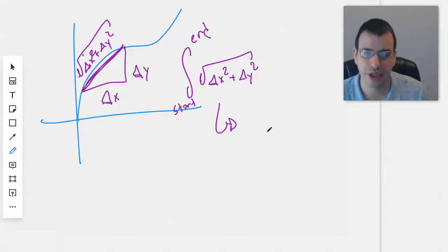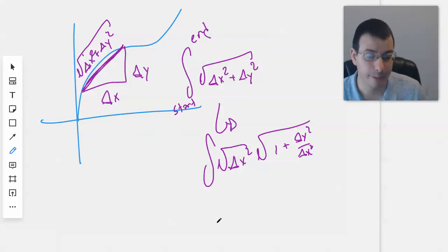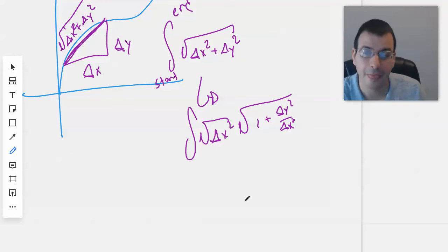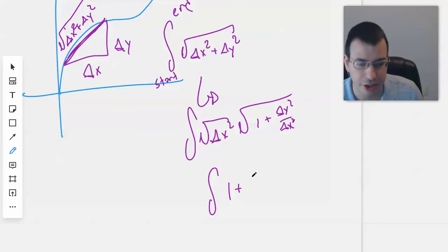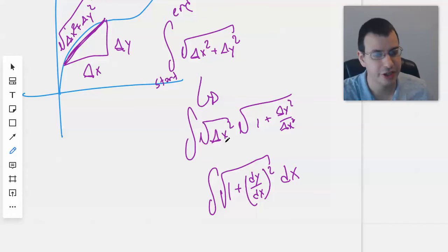When we simplify this, we can do something like dx squared times the square root of 1 plus delta y delta x squared. This would then just go to delta x. And so you get something along the lines of 1 plus dy dx, quantity squared, square rooted, dx. And I converted the delta x to a dx.